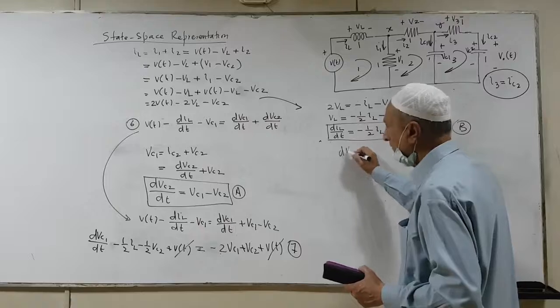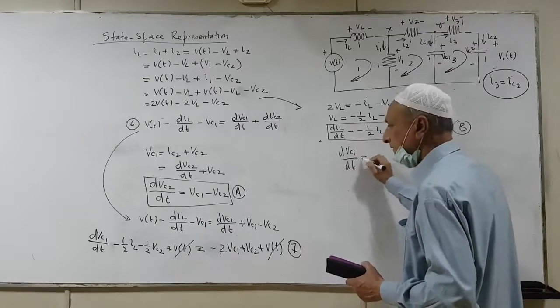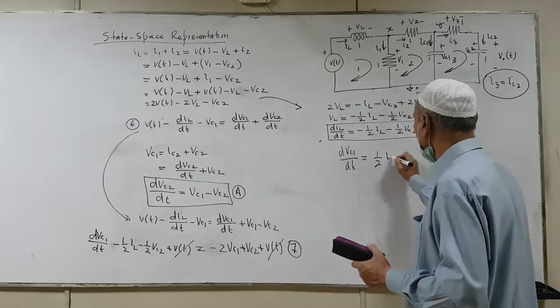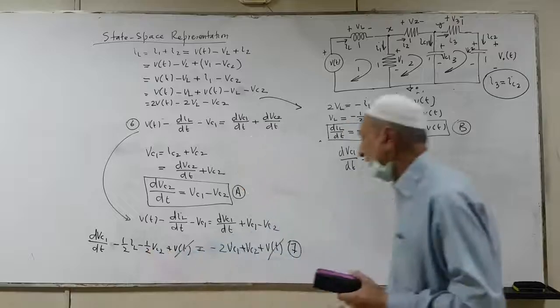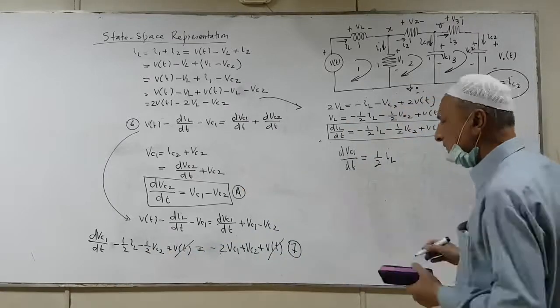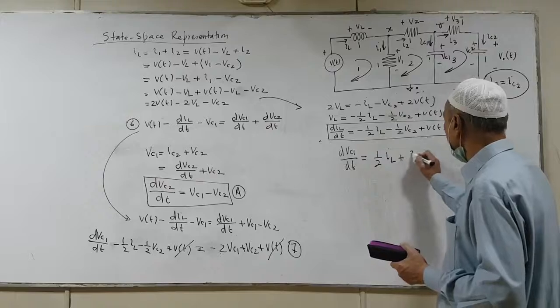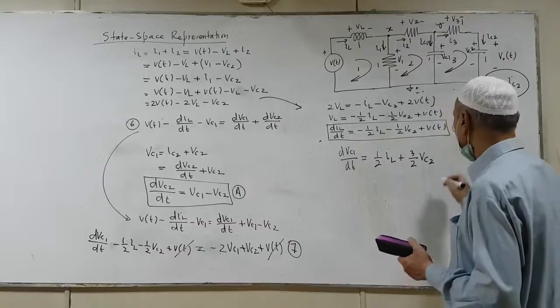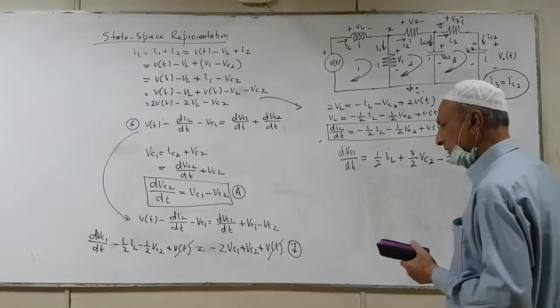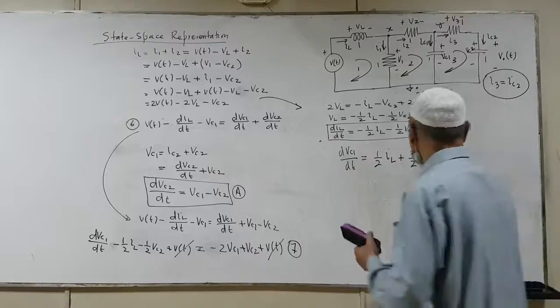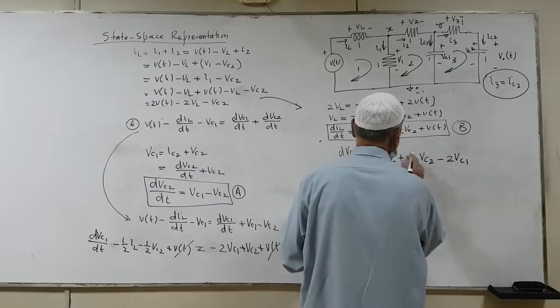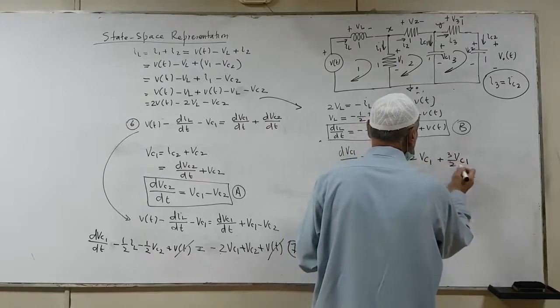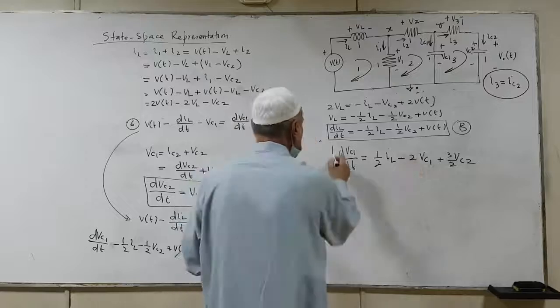And what we have is dVc1 by dt. It is equal to, if I take this on the other side, it will become 1 over 2 IL, and then plus Vc2, half Vc2 plus 1 is 3 by 2. Then we have minus 2 Vc1, and there is no Vt. So in fact, I can put Vc1 on this side and plus 3 by 2 Vc2. So we have to reshuffle. Now, this is the third equation.